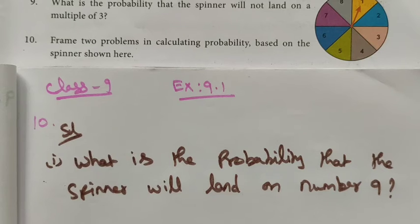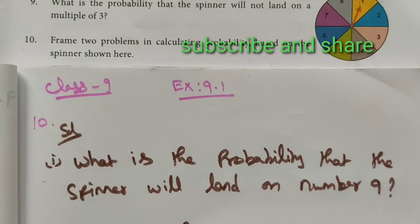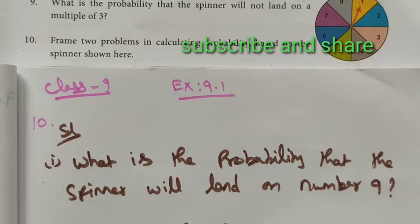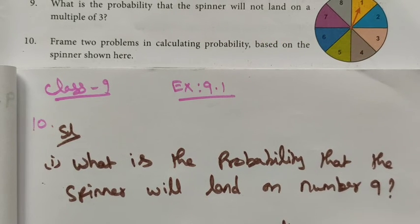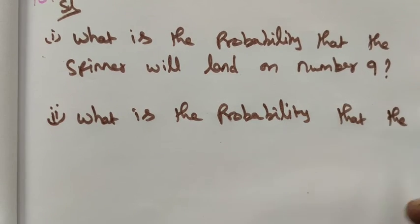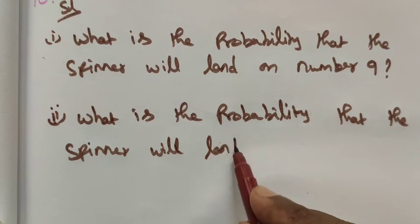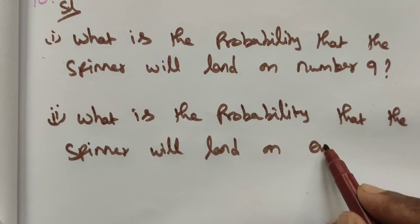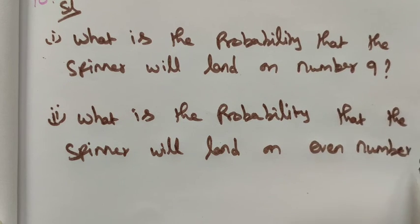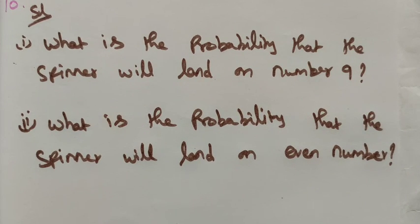Since we have to frame two problems, the second question is: what is the probability that the spinner will land on an even number? This is one example I already told you — we have a lot of examples and we can frame the questions. Thank you, students.